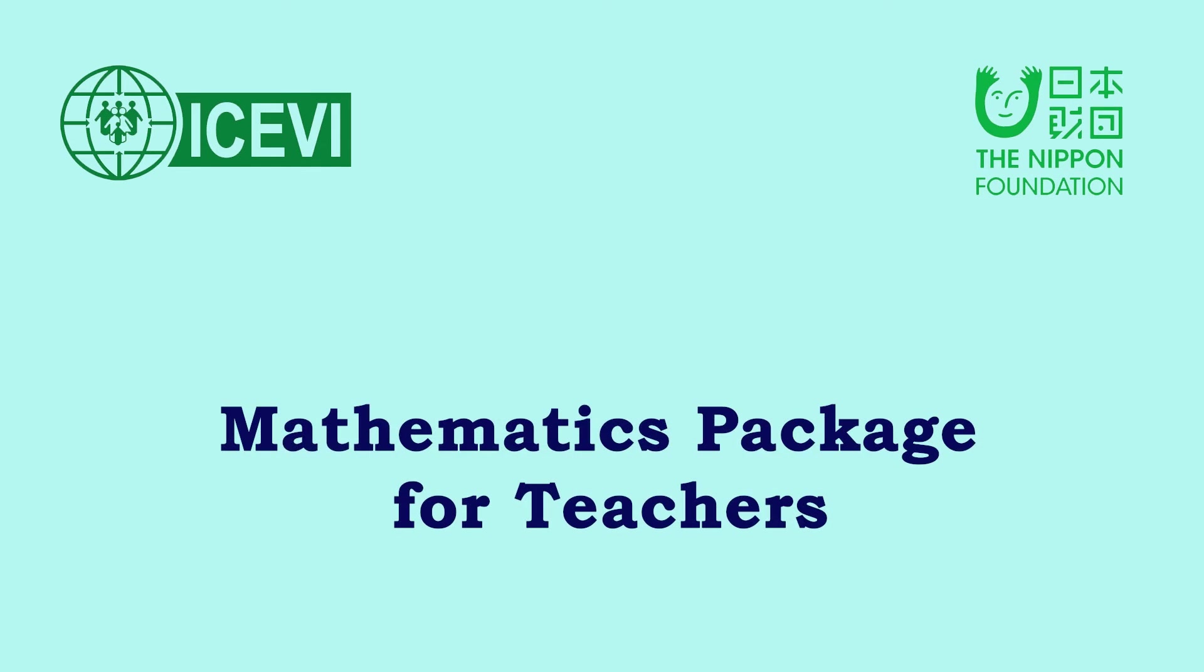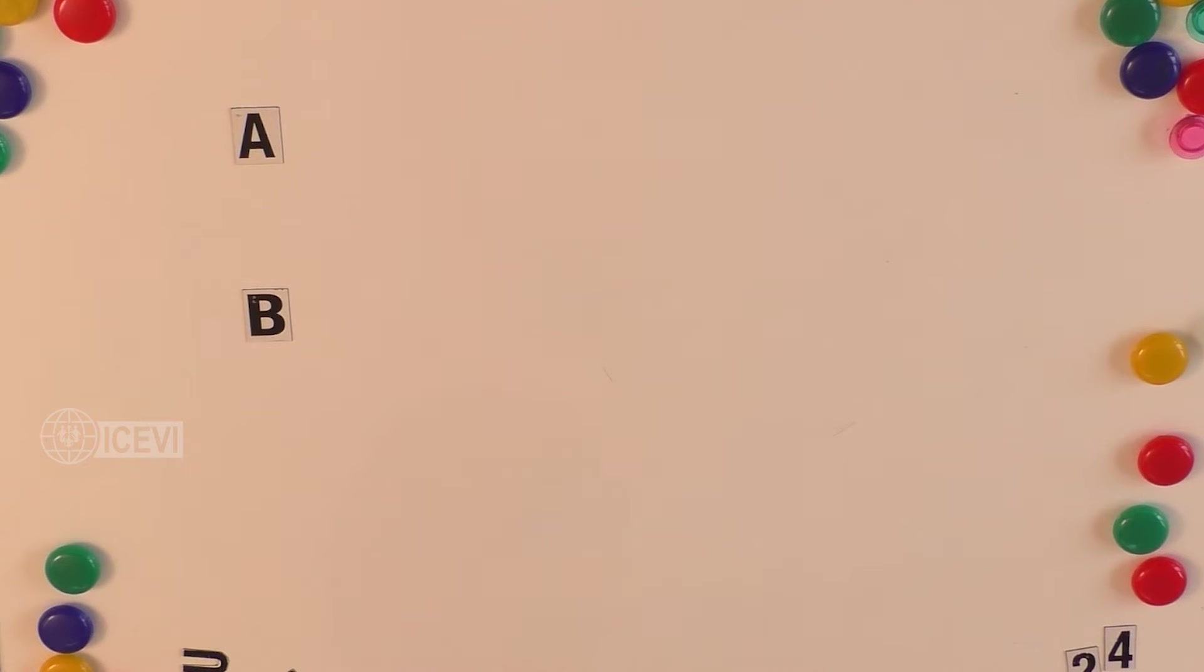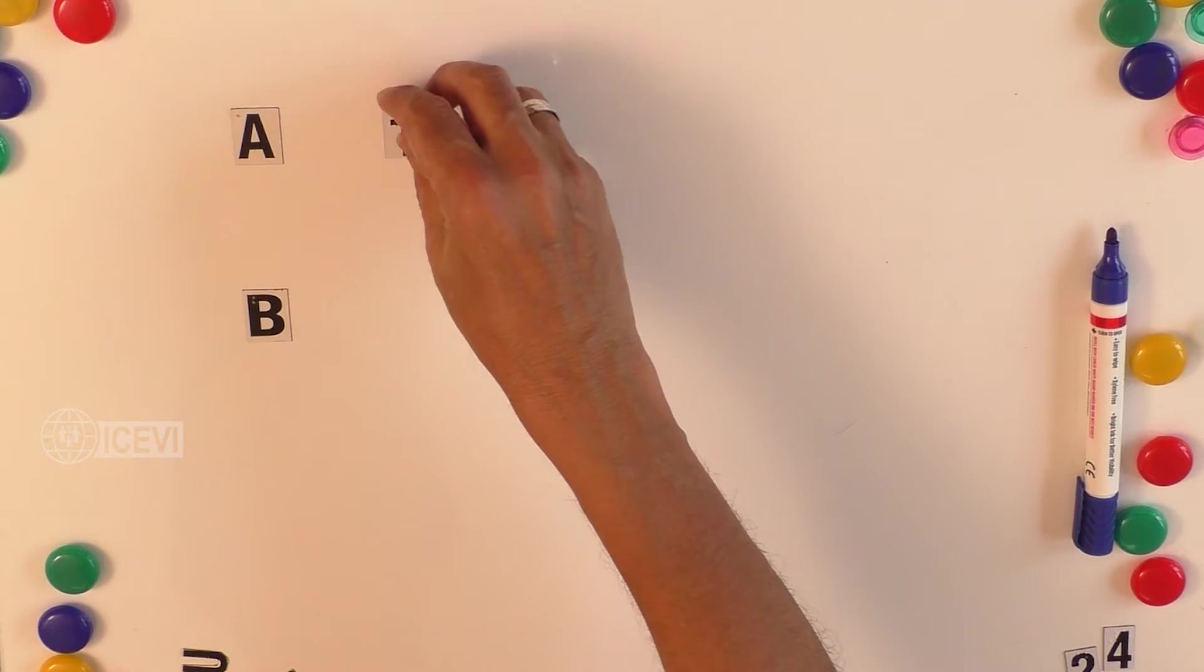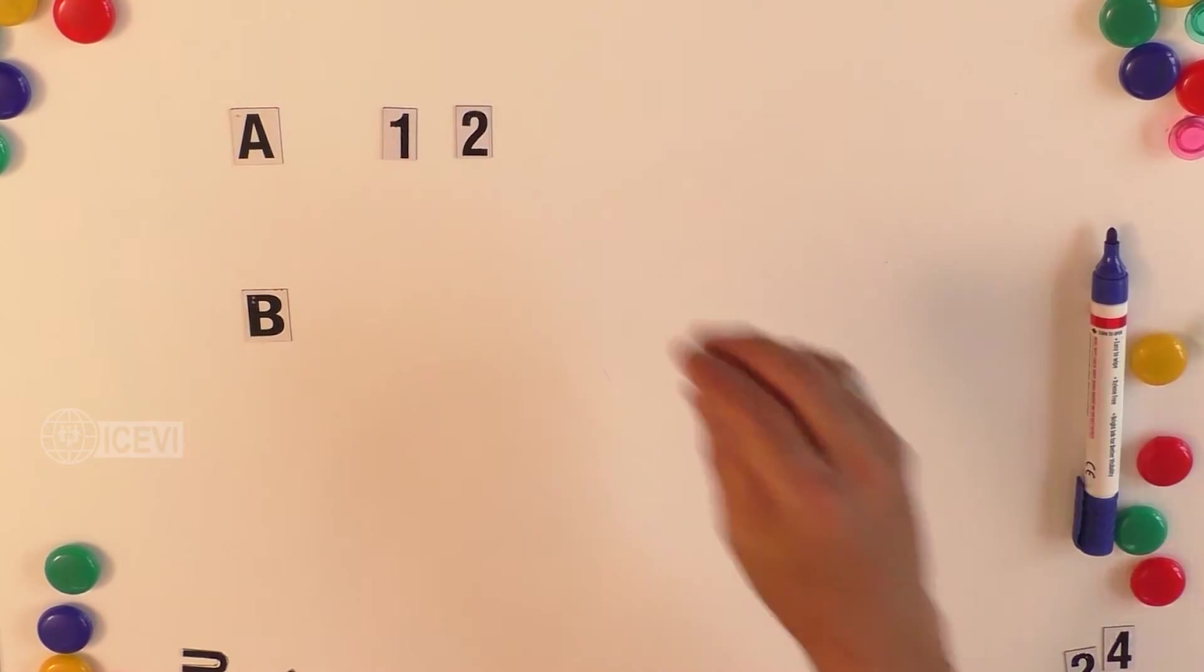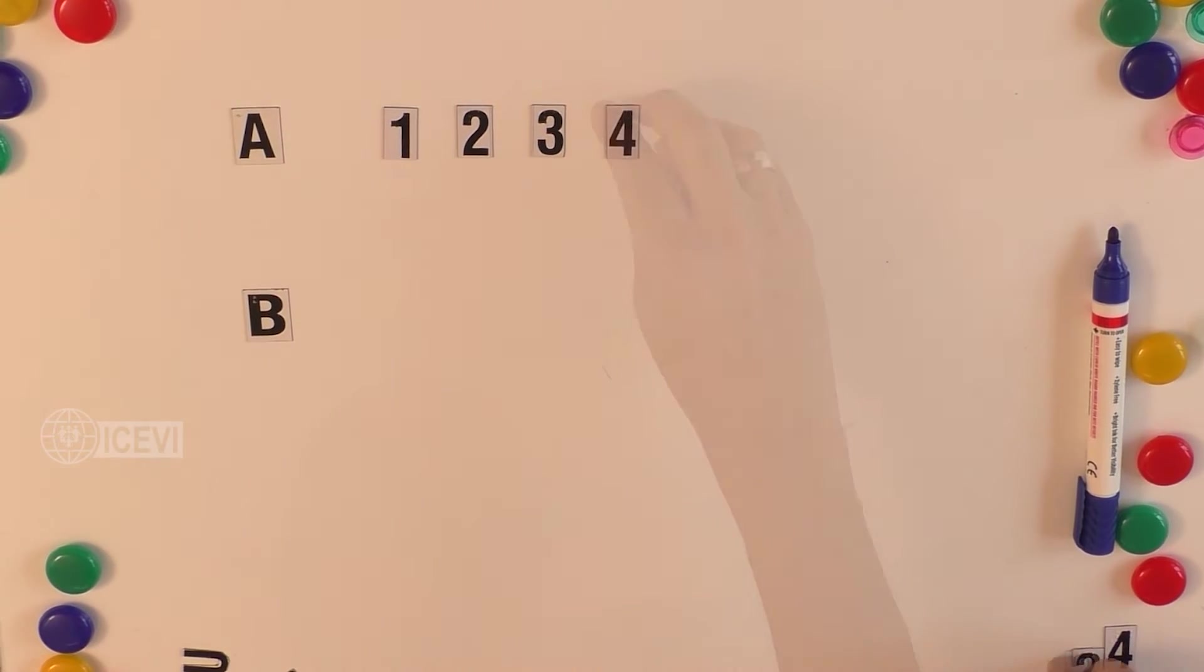The ICBI, the Nippon Foundation Mathematics Package for Teachers. Let us define a subset, proper subset, and improper subset. Now let us consider set A consisting of four elements: 1, 2, 3, 4, and let us consider set B with two elements, 2 and 4.